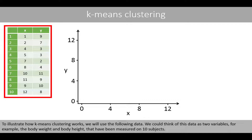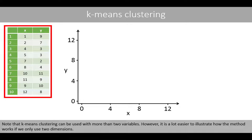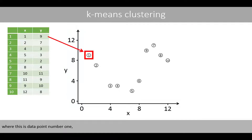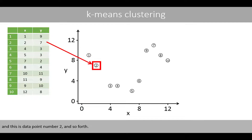We could think of this data as two variables — for example, the body weight and body height that have been measured on 10 subjects. Note that k-means clustering can be used with more than two variables. However, it is a lot easier to illustrate how the method works if we only use two dimensions. Let's make a scatter plot of the data. This is data point number one, this is data point number two, and so forth.